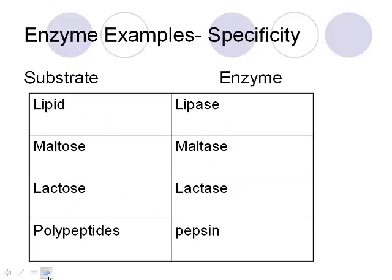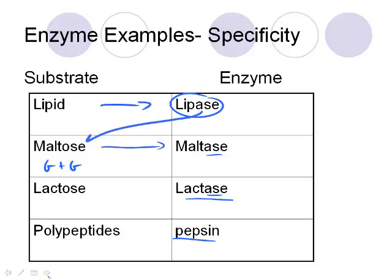Specificity: as I was saying, lipids only ever get broken down by lipase; maltose, which is just glucose and glucose together, is broken down by maltase; lactose is broken down by lactase. Almost all of them have that '-ase' ending, which can indicate that it's an enzyme — except for pepsin, found in the stomach, which breaks down polypeptides, basically a protein.